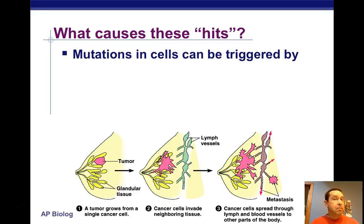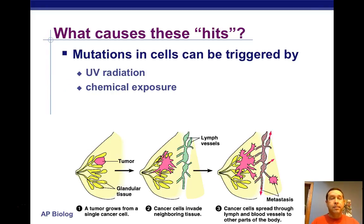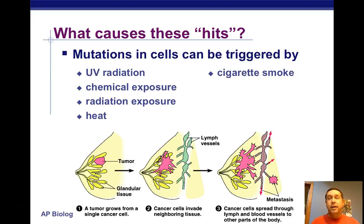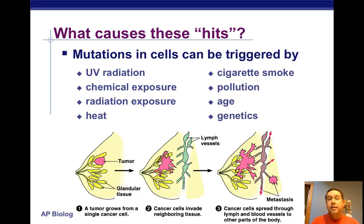What causes these hits or mutations? Mutations can happen due to many things: high-energy radiation like UV radiation can damage DNA and lead to mutation; exposure to certain chemicals, mutagens, or carcinogens; sometimes heat. Cigarette smoke contains lots of carcinogenic and mutagenic substances. Pollution can contain harmful substances. Simply age — as cells get older, there's a greater chance that mistakes can happen in copying the DNA. And genetics — inheriting certain genes predisposes us to certain types of cancer.